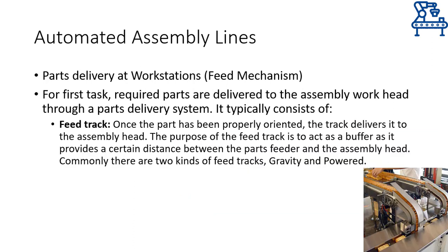After correct orientation has been achieved, the parts are stacked in the track called the feed track. The feed track acts as a buffer for the assembly head — in other words, you can call it a magazine that contains correctly oriented parts ready to be used by the assembly head for assembly purposes. Two types of feed tracks that are commonly implemented are the gravity type and the powered type.